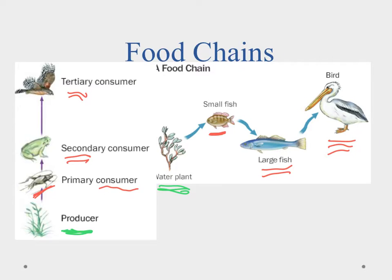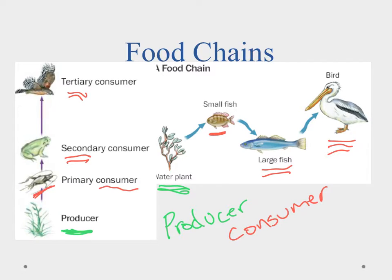In food chains, we always start with some kind of producer that puts energy into the ecosystem in a usable format for animals. Those producers are eaten by consumers — primary, secondary, tertiary, quaternary — depending on how far away they are from the producer.